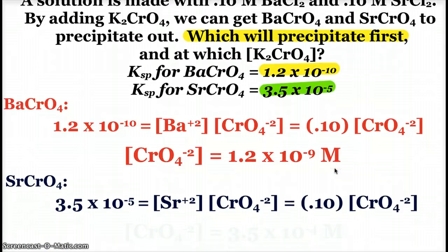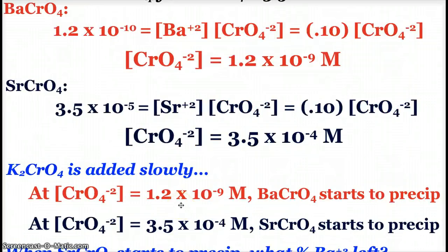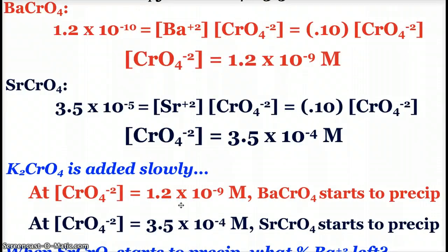I could do the same calculation for strontium chromate, and I would find that when it gets to 3.5 times 10 to the negative 4th molar, that's when the strontium chromate would precipitate out. And that's what this kind of says. I slowly add potassium chromate, the barium chromate starts to precipitate, and then once there's more chromate present, the strontium chromate would start to precipitate.